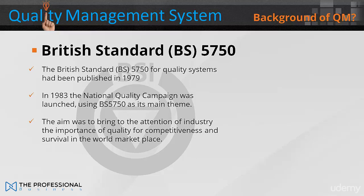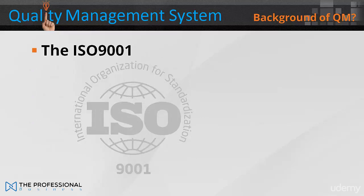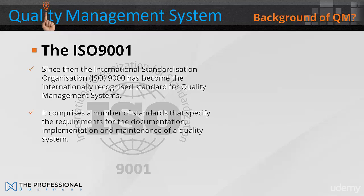The aim was to bring to the attention of industry the importance of quality for competitiveness and survival in the world marketplace. Since then, the International Standardisation Organisation's ISO 9000 has become the internationally recognised standard for quality management systems. It comprises a number of standards that specify the requirements for the documentation, implementation, and maintenance of a quality system.